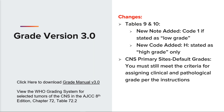You would code the WHO grading system for selected tumors of the CNS, as noted in the AJCC 8th edition Table 72-2, when the WHO grade is not documented in the record. For example, for sites such as the cerebral meninges, you would code a clinical grade of 1, or for glioblastoma, you would code a grade of 4 clinically.